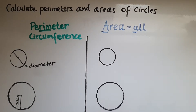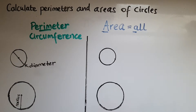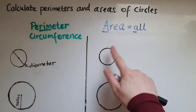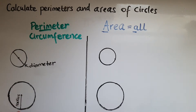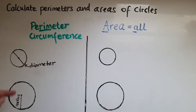In this video we'll calculate perimeters and areas of circles. We worked out the perimeters and areas of other shapes such as squares and rectangles, and we're going to do the same for circles. The perimeter of a circle is called circumference. Area covers all of it. Instead of length and width, we have a diameter — drawn from one side to the other through the center — and a radius, which is only half of it. The radius is half the diameter; the diameter is double the radius.